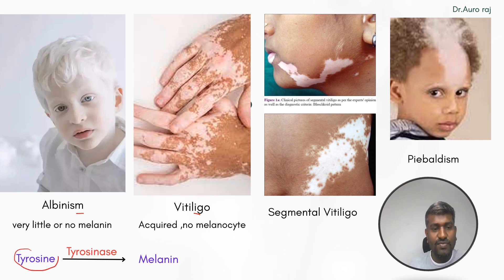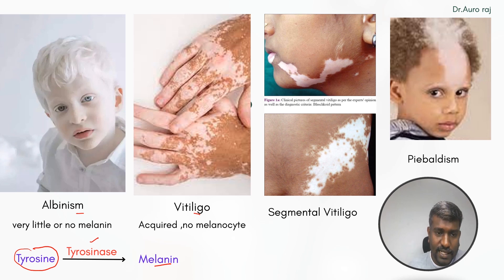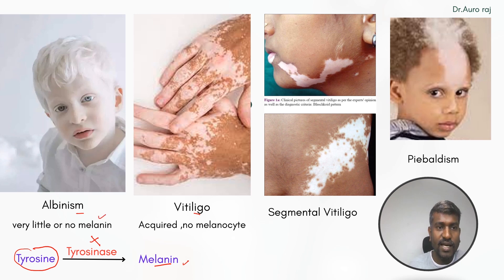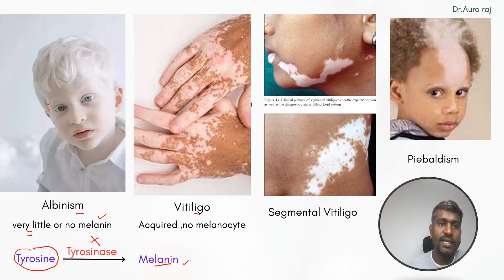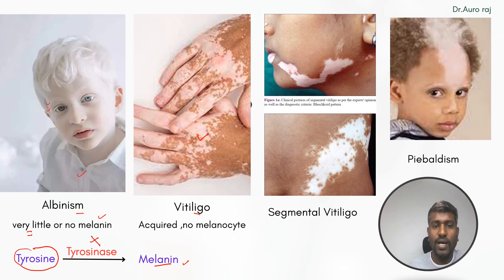If tyrosinase is absent, there will be no melanin. In albinism there is no melanin — look at the image here, even the eyebrows and eyelashes are white in color due to absent or very little melanin. This is albinism.